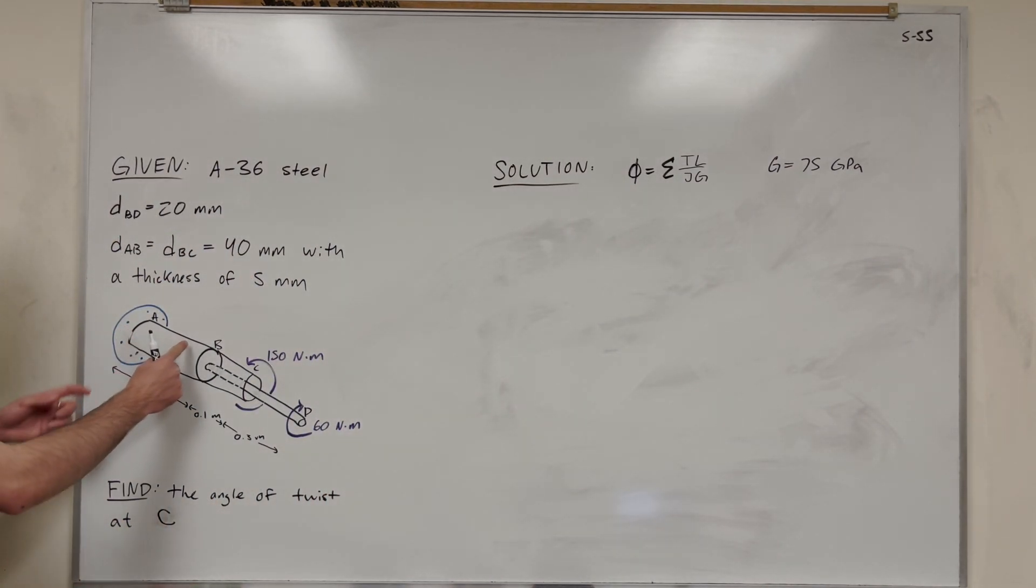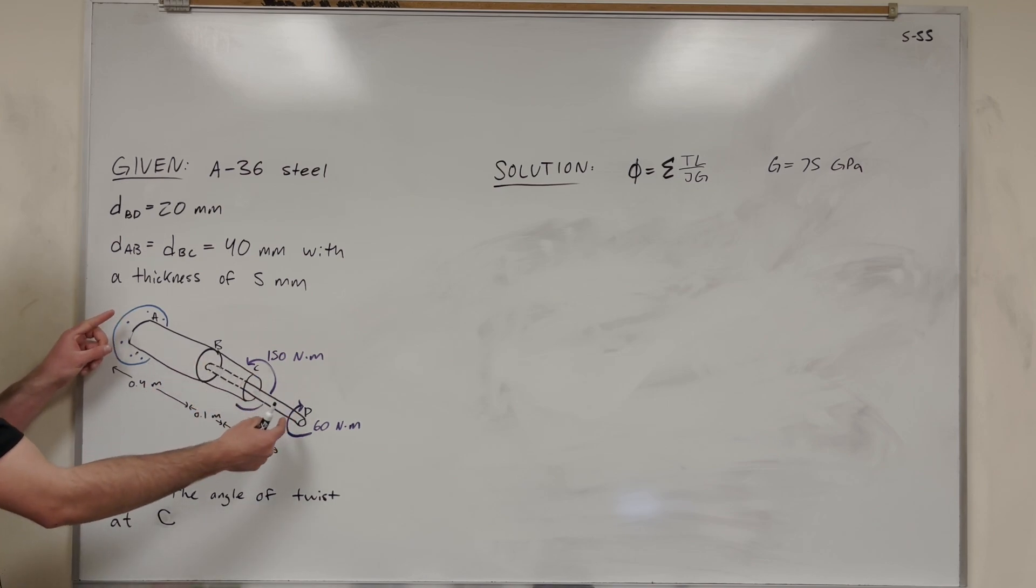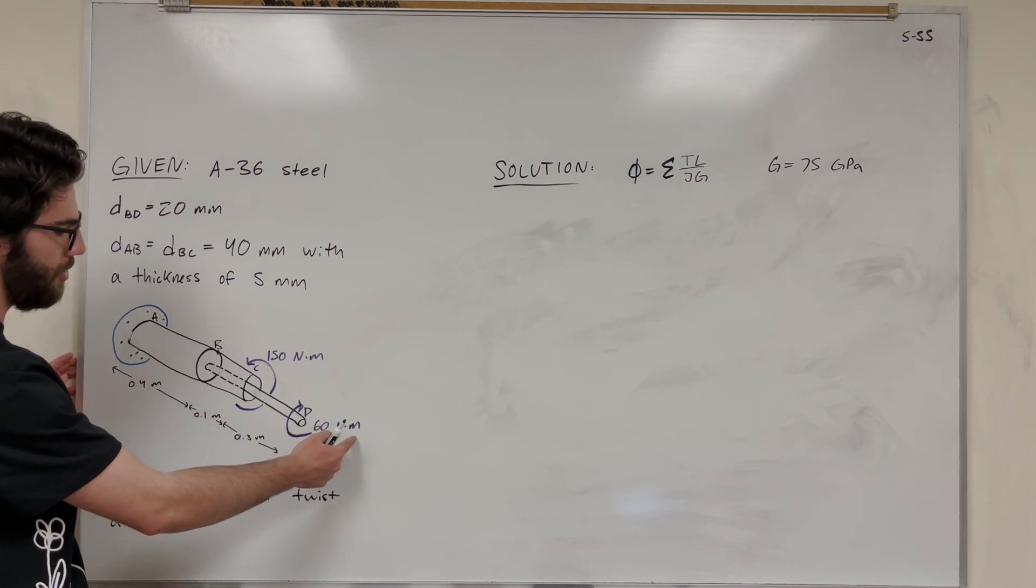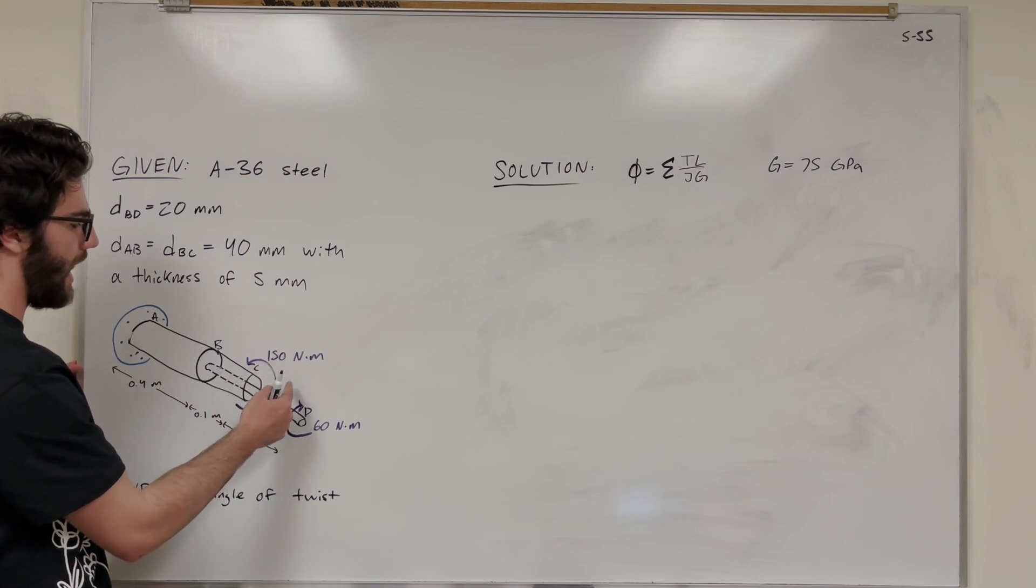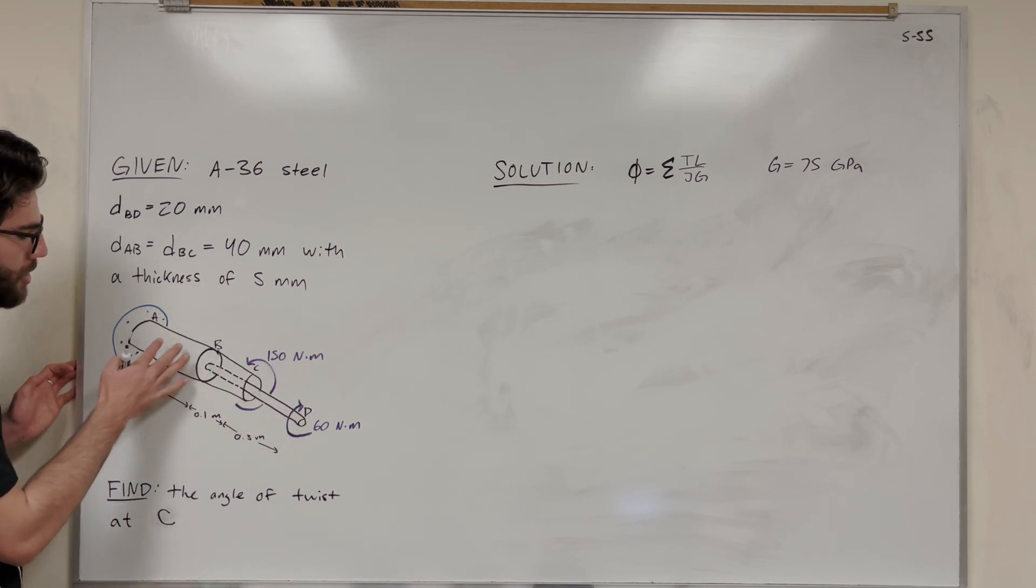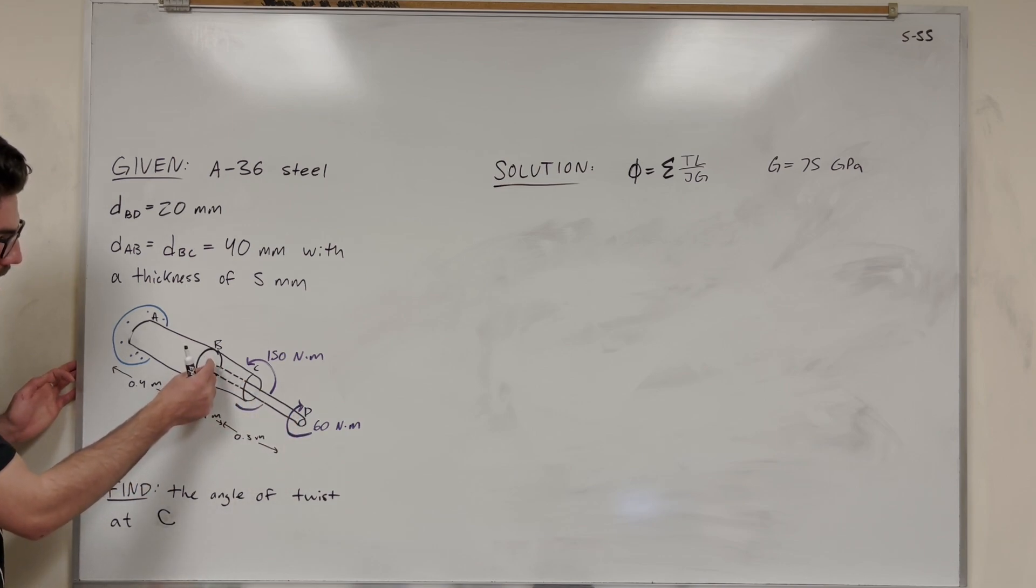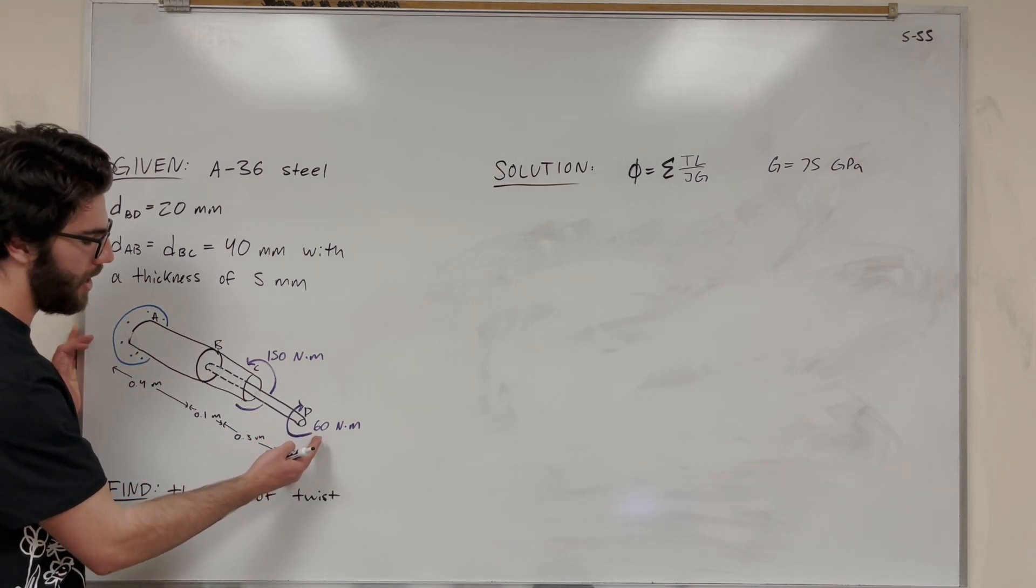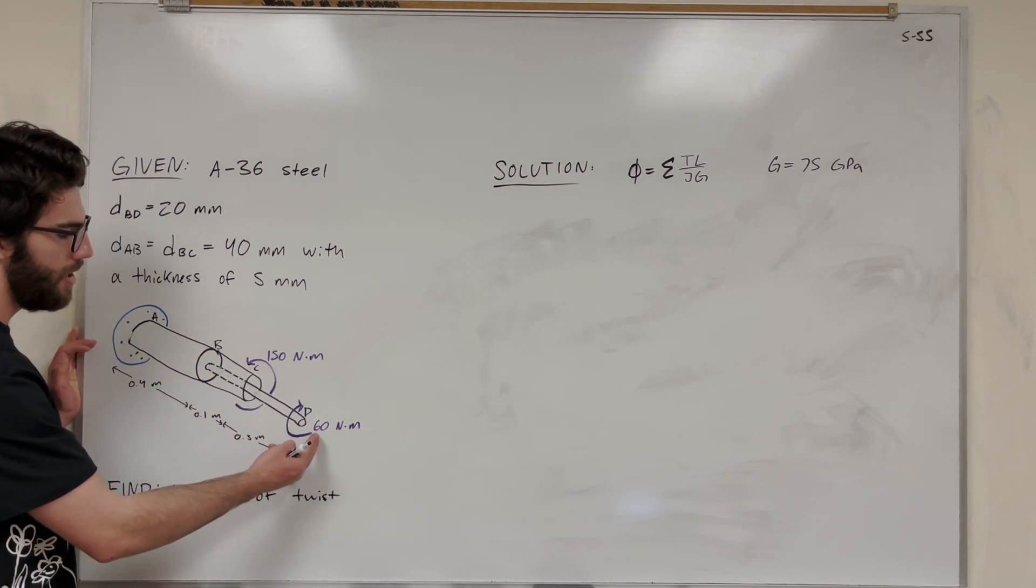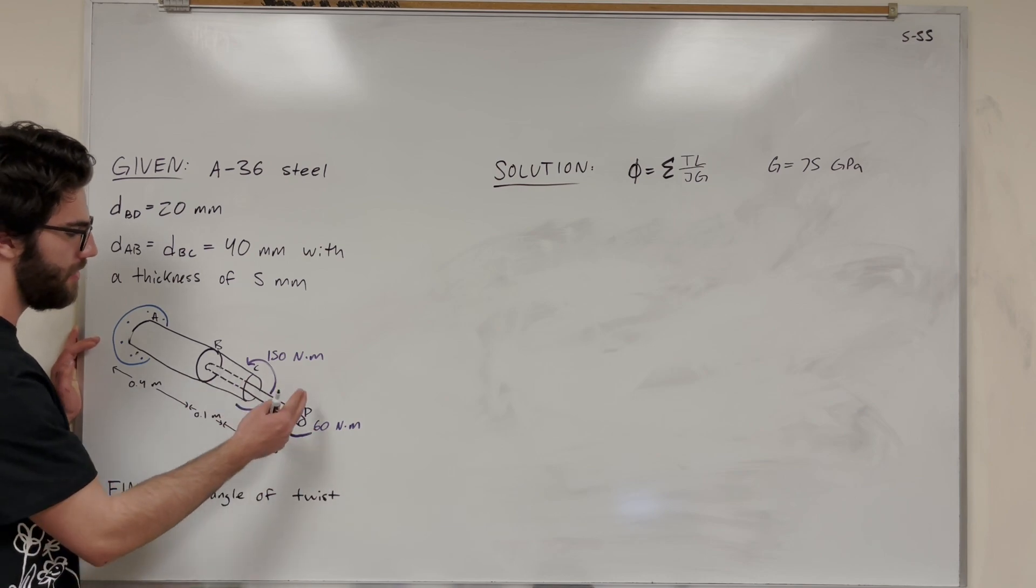First of all, let's find the torque in section AB. Because we know that if AB gets twisted, that's going to also contribute to the twist at C. So AB, we have to add that in our twist formula. AB has these two torques acting on it. It has this 60 Nm torque acting counterclockwise, and then it has this 150 Nm torque acting clockwise. They're both contributing to AB because it's connected at B.